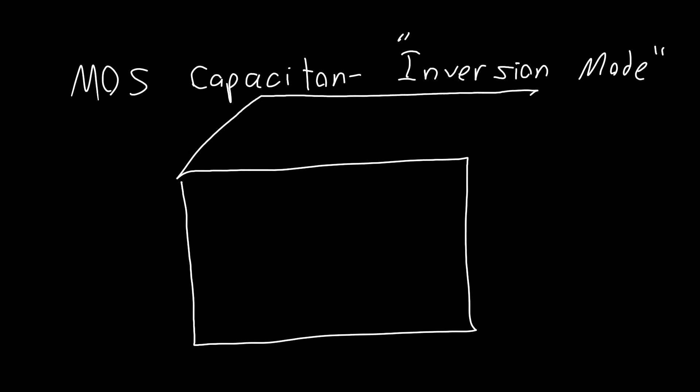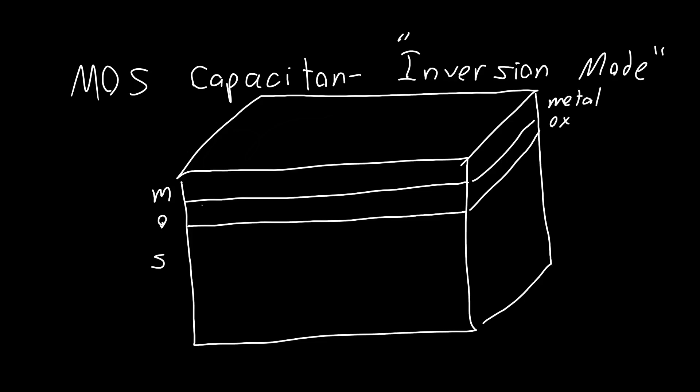The model that we've been using for it is just this nice little cuboid. We've got some metal up top, some oxide insulating oxide in the middle, and a semiconductor. Metal oxide semiconductor, MOS.